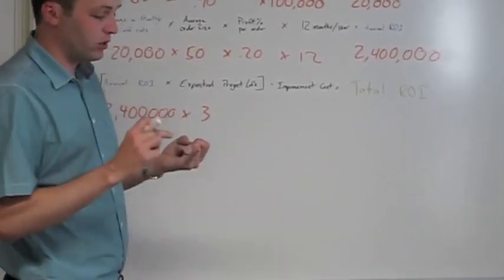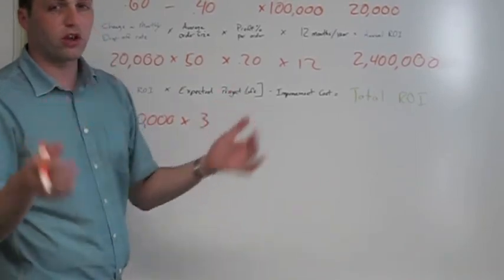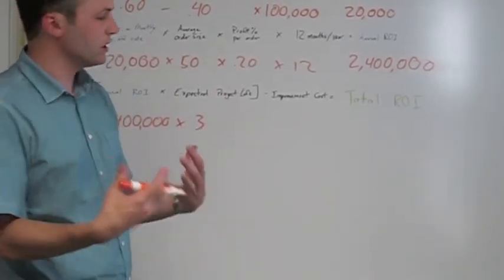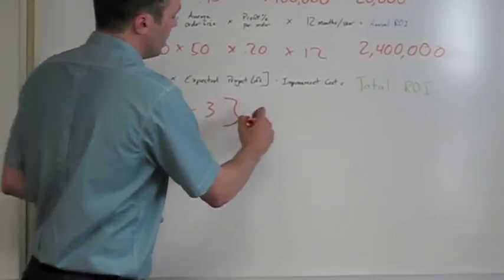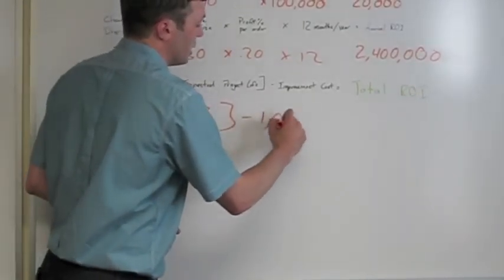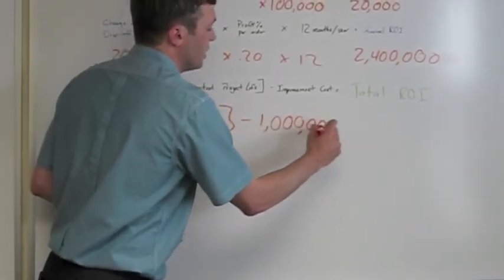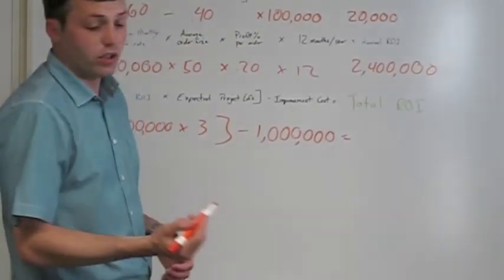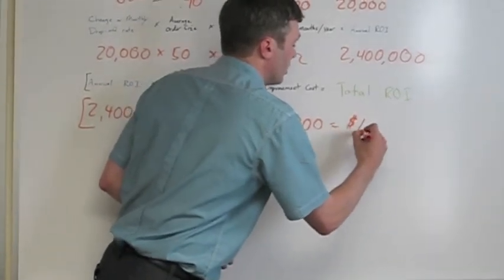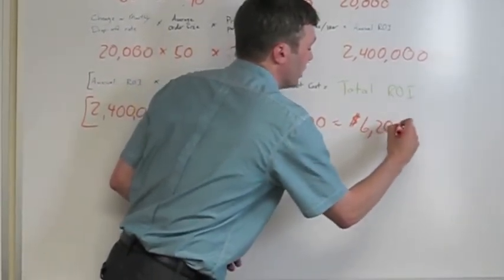Let's say between design and development and research and all the elements that came in, the stakeholders, everyone's time involved, cost us roughly a million dollars to do. So we subtract the cost, the original cost of a million dollars in this project. And then we get our total ROI, which in this case actually comes out to 6.2 million dollars.